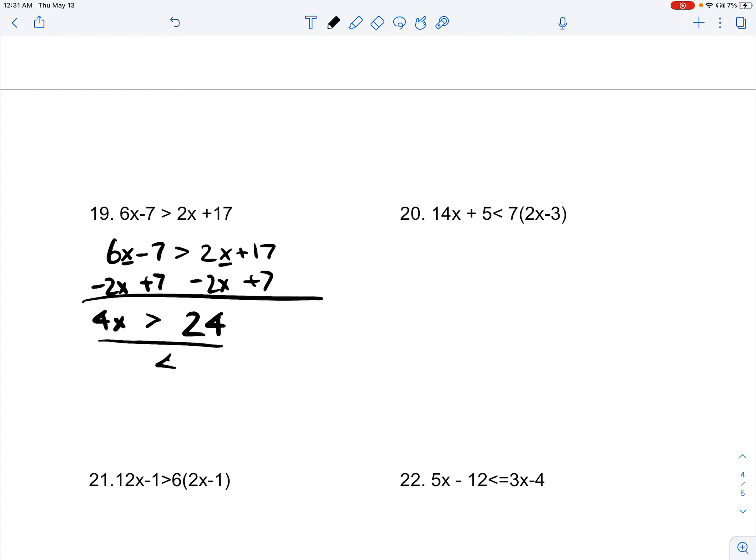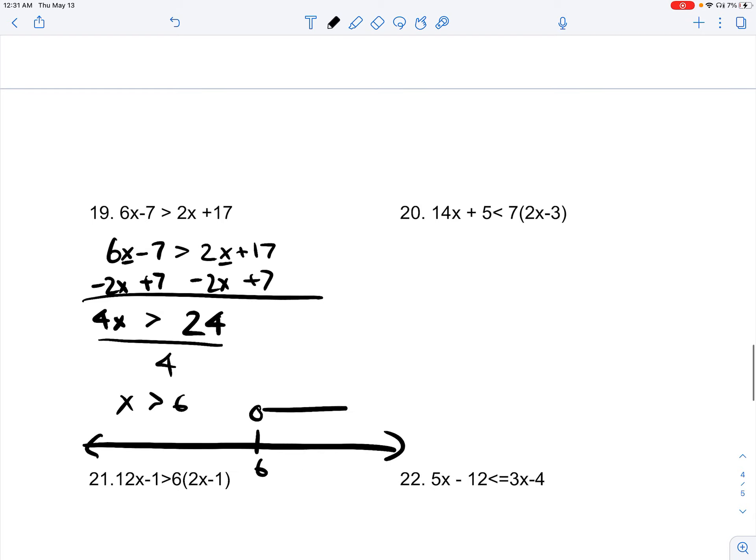Now, if we divide 4 on both sides, we get x is greater than 6. What does this mean? On the number line, at point 6, all the numbers greater than 6 will be the solution to this inequality.